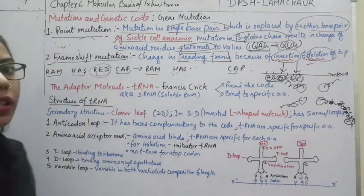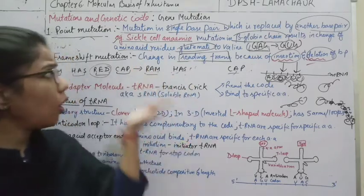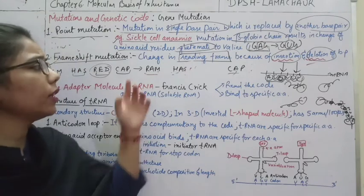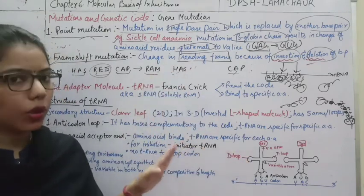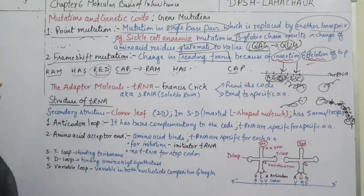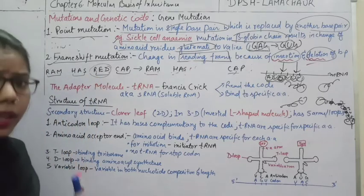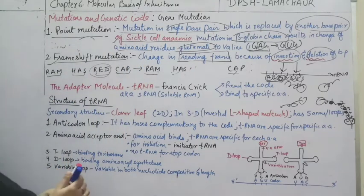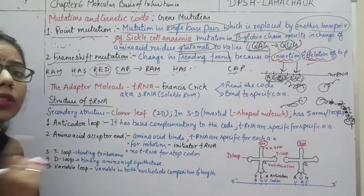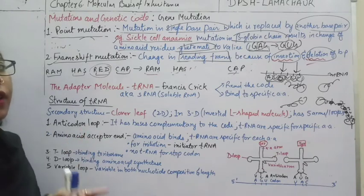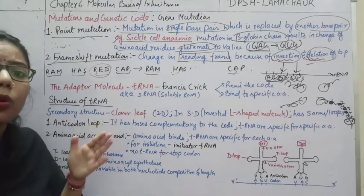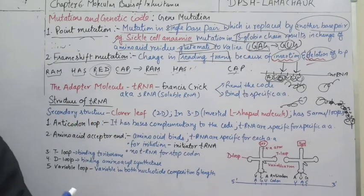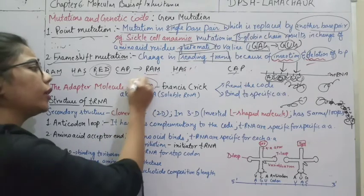So this is mutation. Whether it will be insertion, deletion, or point mutation, there will be a change in the sequence of the chain and a change in the amino acids. Ultimately, the protein formed will not be the desired one, and it may cause diseases. Here we have completed the genetic code and mutation — what changes can happen and what are the consequences.